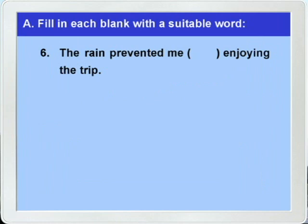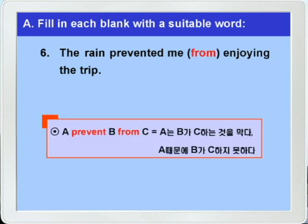6번으로 가죠. 'The rain prevented me ___ enjoying the trip.' prevent하면 뭐가 생각납니까? 그렇죠. 'A prevent B from C'가 생각이 나시죠. 그래서 정답은 from을 쓰면 되겠습니다. 'A prevent B from C' 하면 'A는 B가 C하는 것을 막다', 다시 말해 'A 때문에 B가 C하지 못하다' 이런 뜻이었죠.